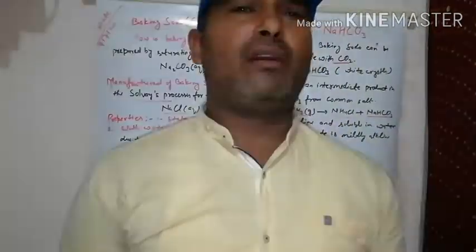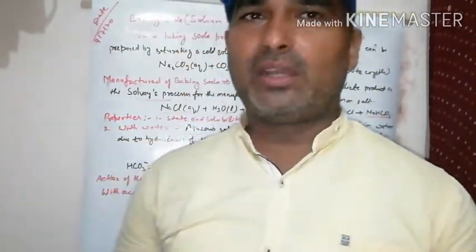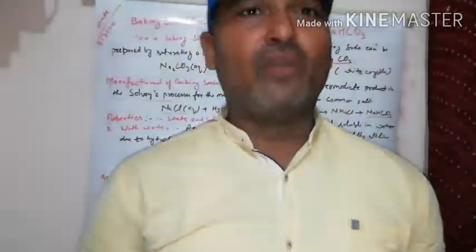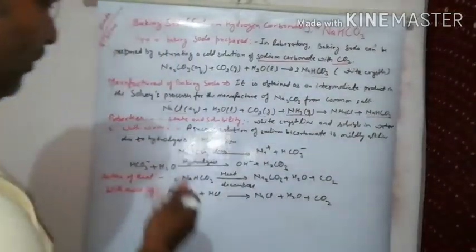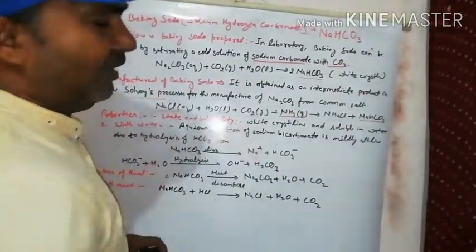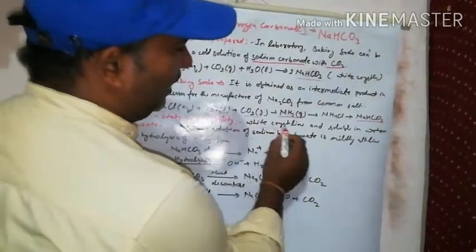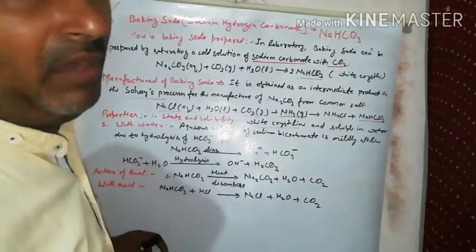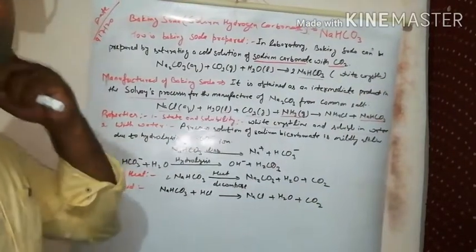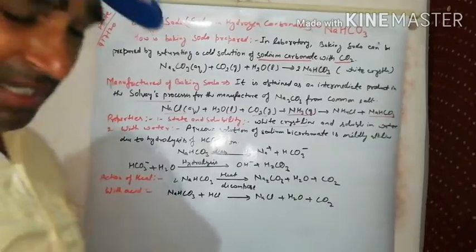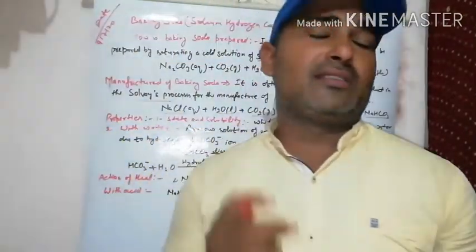Properties of baking soda: first property - state and color. Baking soda exists in white crystalline form. It is soluble in water. Reaction with water: baking soda acts as an antacid, meaning it neutralizes excess acid. Aqueous solution of sodium bicarbonate is mildly alkaline. Due to hydrolysis of the bicarbonate ion, it gives hydroxide ions, making it mildly basic.